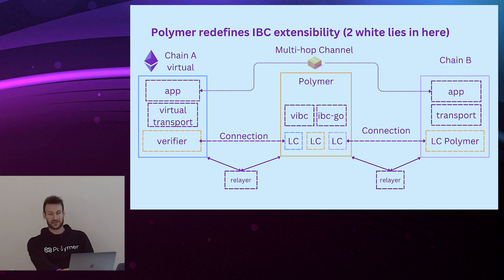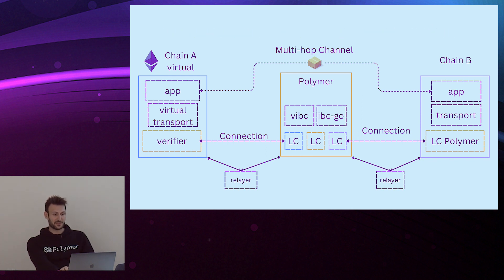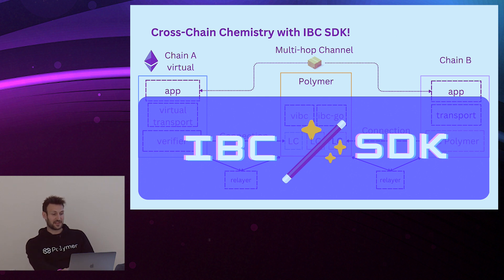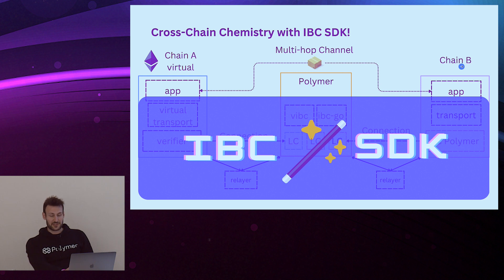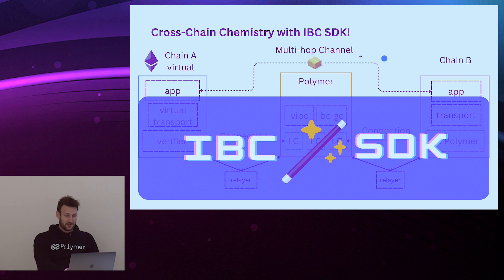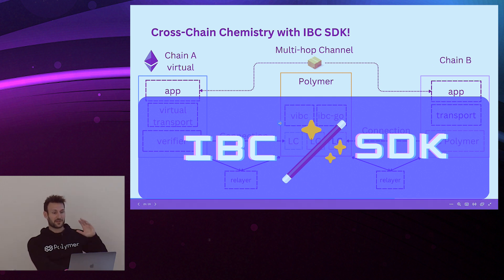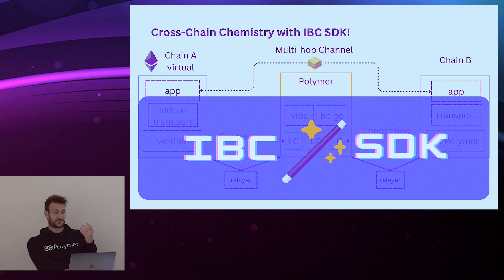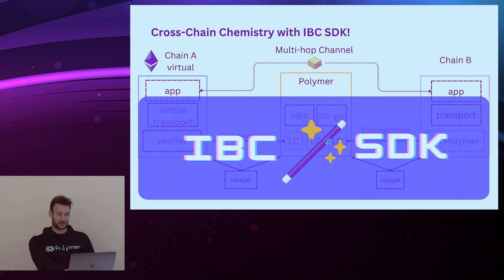There are two white lies in the story, just to avoid overcomplicating it. Ultimately, the IBC SDK just wants to make sure that application developers — on Ethereum or a Cosmos chain or any chain — can build applications without worrying about what Polymer does in the background. Polymer does a lot of orchestration, but application developers just want to deploy their applications, test them, and be up and running. This is what the IBC SDK does.